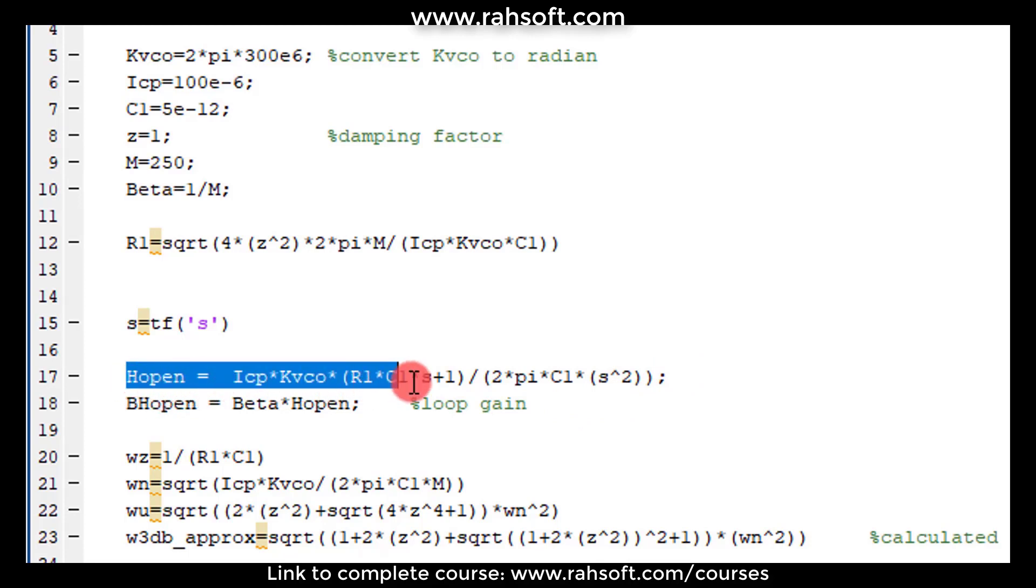So for H open, I'm defining this as we know from our system. So ICP KVCO R1 C1 S plus 1. This is my zero here as you see and this is divided by 2 pi C1 times S squared.